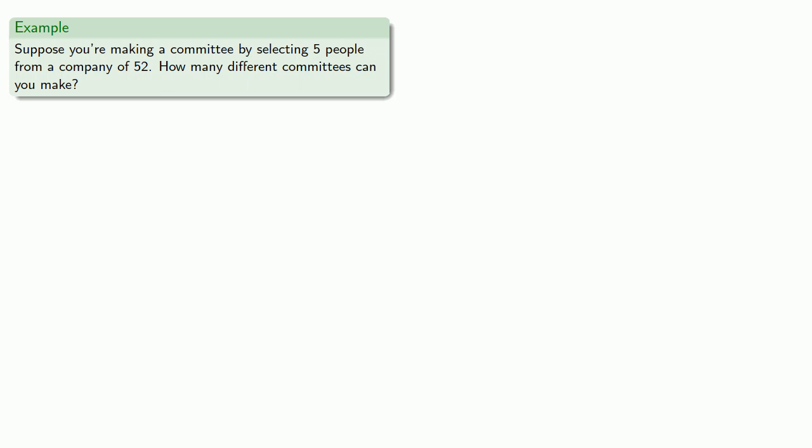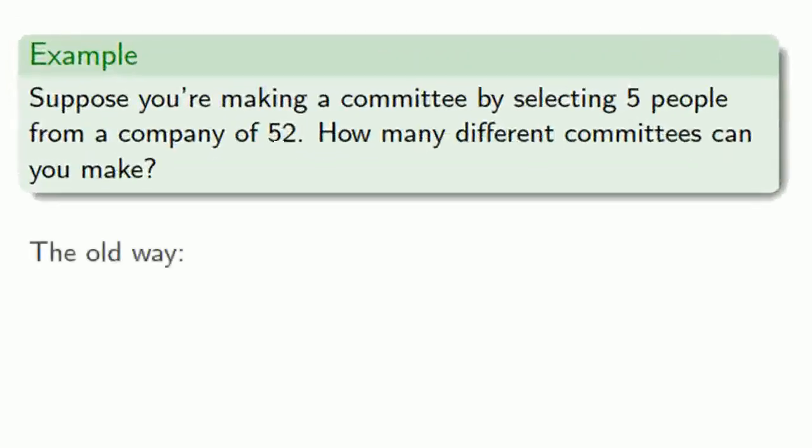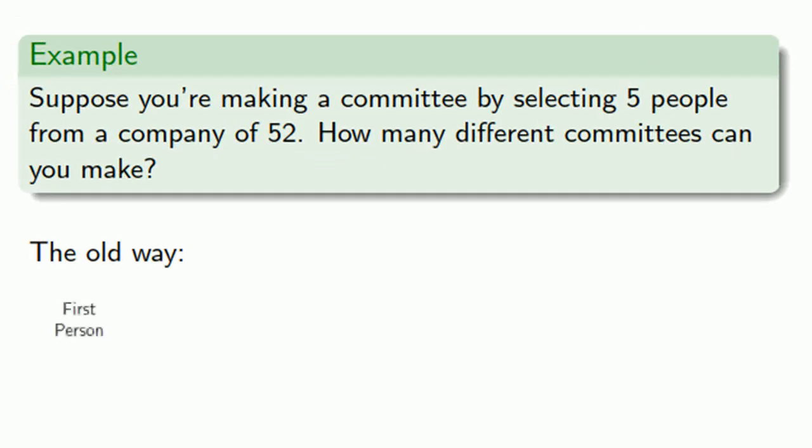So let's do this problem the old way. So to make that committee, we have to choose a first person, a second person, a third, a fourth, and a fifth. And so for each of these, we have a certain number of choices from 52 down to 48. And so we have a heck of a lot of choices.